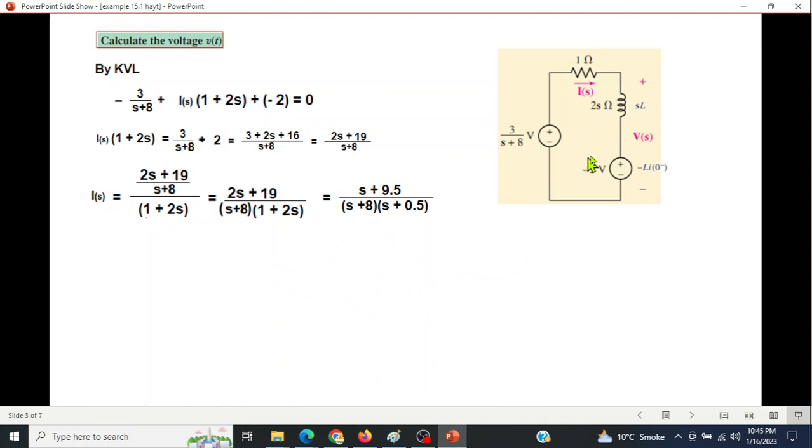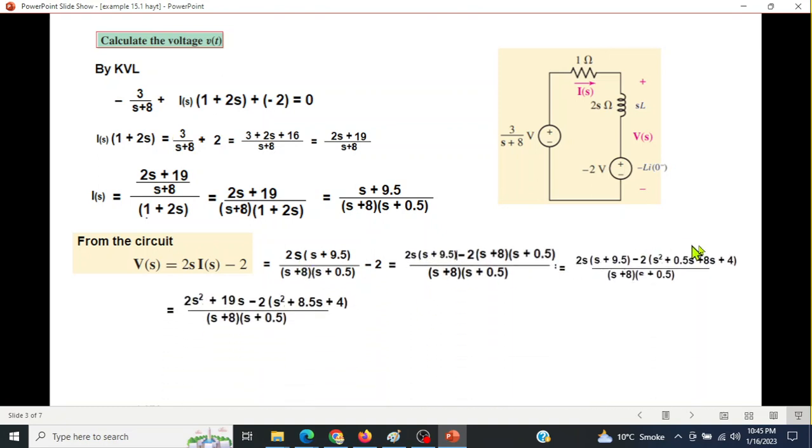The IS we have found, now we need to find V(S). V(S) can be written as 2S×IS - 2. Putting the value of IS in this and simplifying step by step, we get our final form.